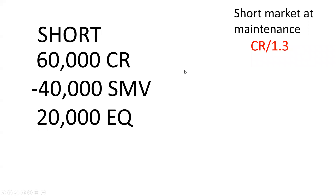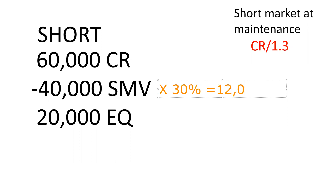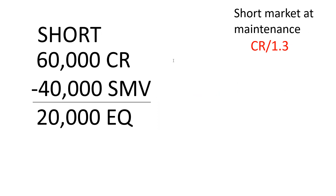Now let's look at the other formula. Here's a customer who's short, and he has $60,000 in cash in the account's credit register. That came from selling the borrowed stock plus the margin he had to put up — we'll assume he sold short a thousand shares at 40. Be very careful what you're being asked. If I ask what is maintenance on the account, that would be 30% of $40,000, which is $12,000. But that's not what we're discussing here.